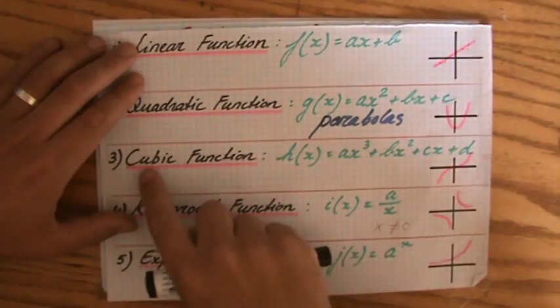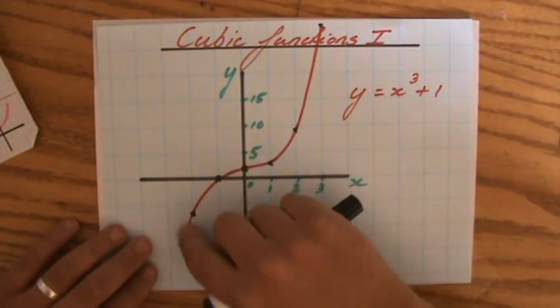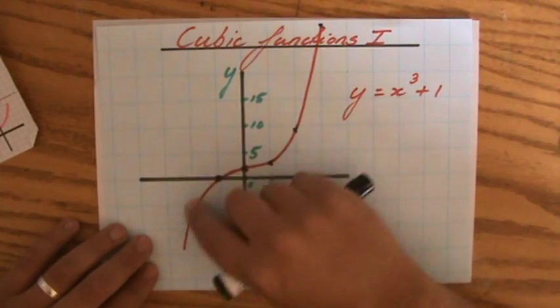We found out that a cubic function, when we graph it, is a beautiful S figure. Like we can see here, it is a beautiful S kind of figure.